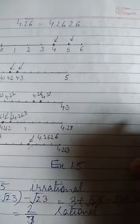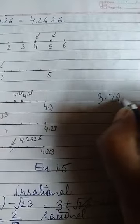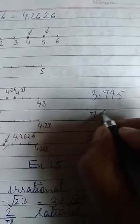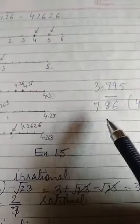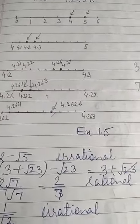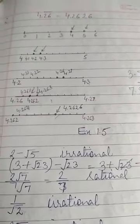I will give you two more practice questions. Do them in your rough notebook: 3.795, and 7.86 bar up to four decimal places. Practice these questions yourself. Now we move to worksheet 1.5.